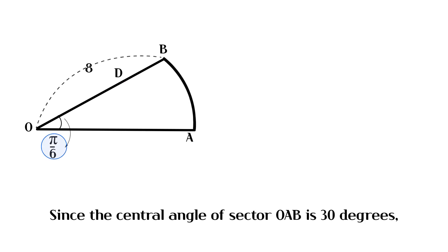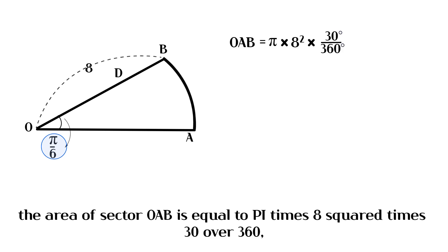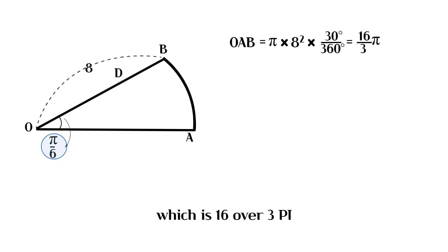Since the central angle of sector OAB is 30 degrees, the area of sector OAB is equal to pi times 8 squared times 30 over 360, which is 16 over 3 pi.